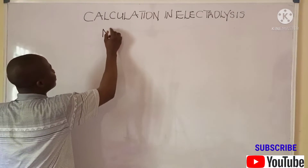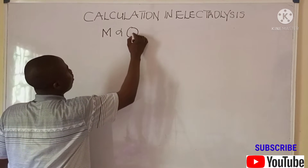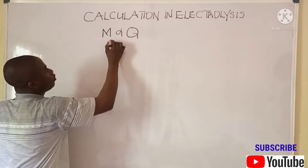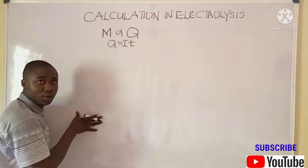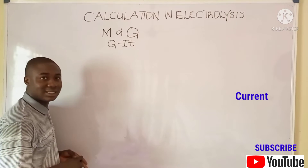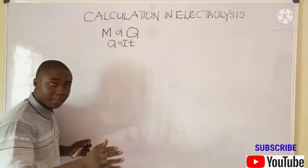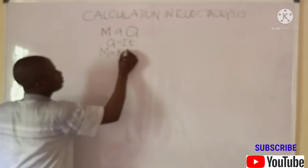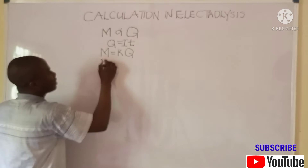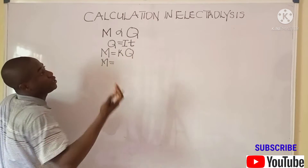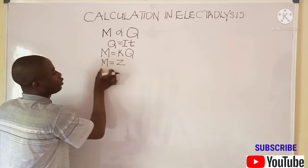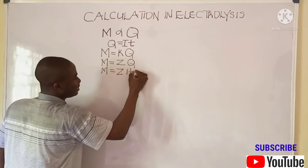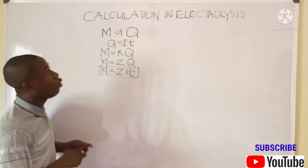From the first law of electrolysis, mass is directly proportional to quantity of electricity, Q. Q is given by the formula Q = it, where i is current and t is time. Current should be in amperes and time should be in seconds. Bringing in a constant, mass becomes kQ, and changing k to the constant z or e, it becomes m = zQ, and since Q = it, mass becomes m = zit. This formula should be noted when solving problems on electrolysis.